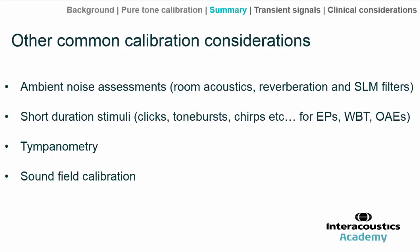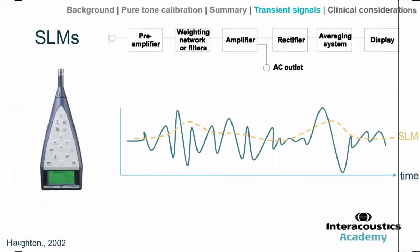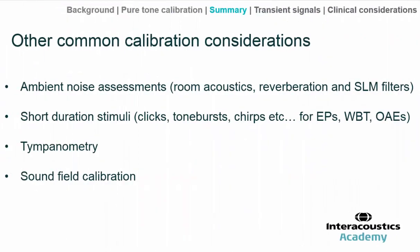Traditional tympanometry involves not just pure tones, but also the pump and microphone that would be calibrated. For sound field testing, there's a series of reference equivalent threshold sound pressure levels available for different incidences, like straight ahead or off to one side. Wobble tones are typically used to prevent standing waves from forming, and we'd typically use a different microphone attached to the SLM than the ones used in the coupler. In principle, the information we've learnt so far is very transferable to these different applications.